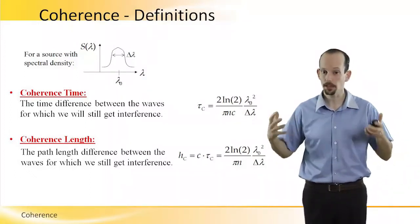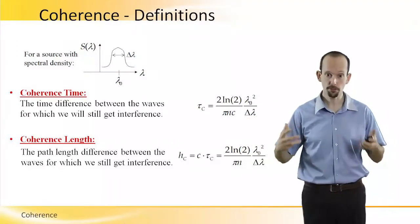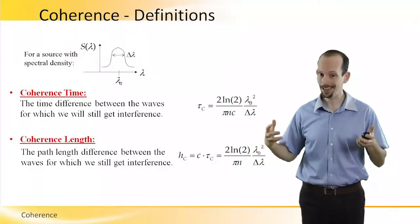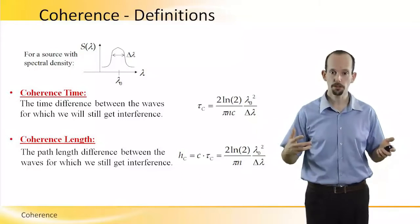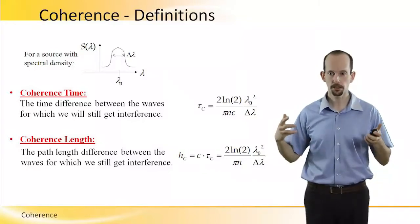Whereas the coherence length is defined as the path length difference between the waves for which we will still get interference.